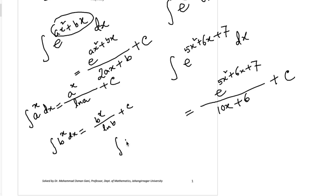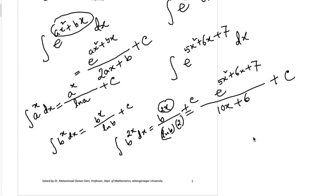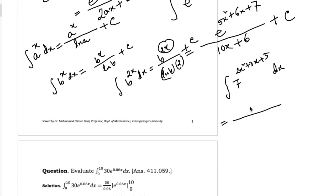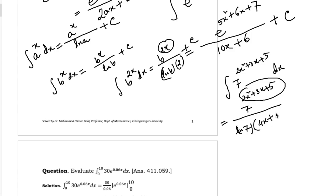Another example: integration of b to the power 2x, which is b to the power 2x divided by ln b, times the derivative of 2x which is 2. So you need to divide the result by 2 as well. Another example: integration of 7 to the power 2x² plus 3x plus 5 equals 7 to the power 2x² plus 3x plus 5, divided by ln 7, times the derivative of the power which is 4x plus 3, plus integrating constant c.